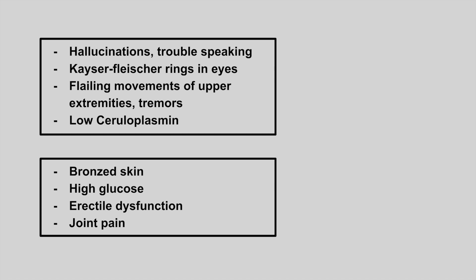The next patient is going to have hallucinations, trouble speaking, Kayser-Fleischer rings in the eyes, flailing movements of the upper extremities, tremors, and low ceruloplasmin. This is Wilson's disease. These patients have a high copper level that gets deposited into different parts of the body — mostly neurologic symptoms, liver issues, and the Kayser-Fleischer rings. Remember: high copper and low ceruloplasmin.